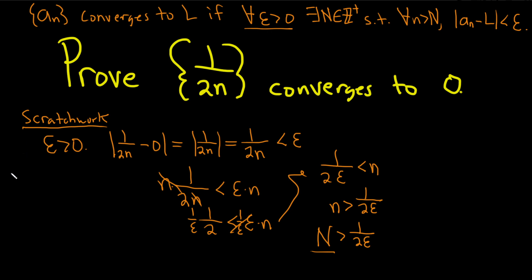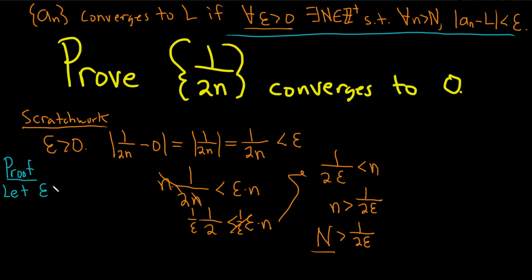Let's go ahead and do the proof — I'll keep the definition visible as we go through it. We start the proof by letting epsilon be greater than zero. Then we choose a positive integer N greater than 1 over 2 epsilon by the Archimedean principle.